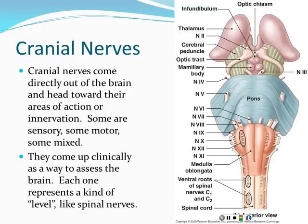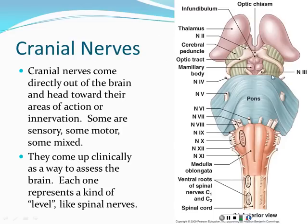Cranial nerves are one of those things you just have to memorize — it comes up on exams. There are 12 of them. A cranial nerve comes directly out of the brain, unlike most spinal nerves. We number them with Roman numerals according to where they emerge: the highest-emerging nerve gets the lowest number. Starting from just below the cerebrum and working down through the brainstem gives us numbers I through XII.